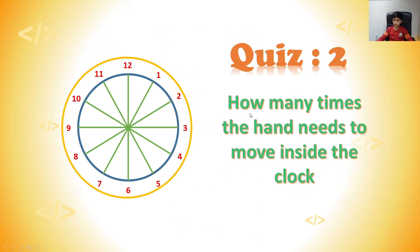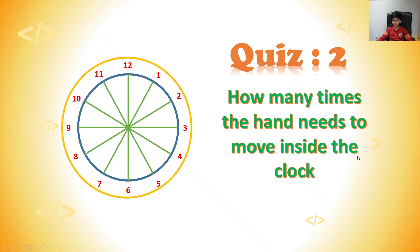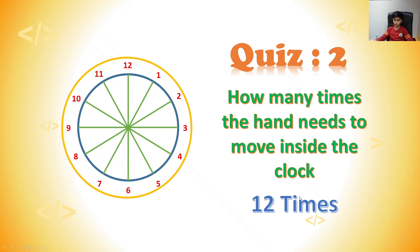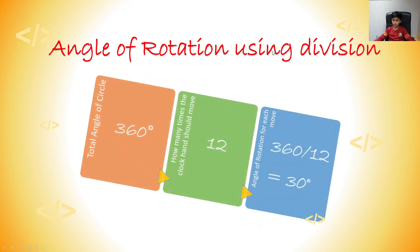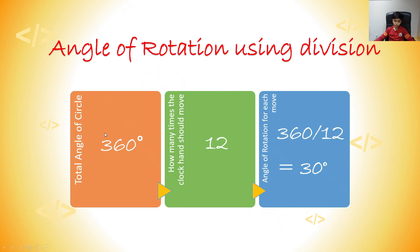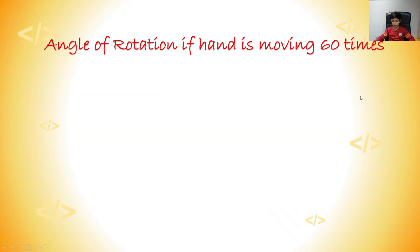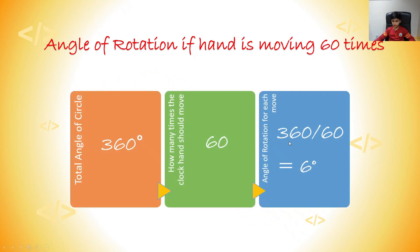Quiz number two: how many times does a hand need to move inside a clock? The answer is twelve times. But this is kind of tricky, because sometimes you want it to move 60 times or sometimes 12. Because we need to make it simple, we just made it 12. To calculate the angle of rotation using division, you take the angle of a circle and divide by the number of times you want your hand to move around the clock. In this case, 360 divided by 12 equals 30. If you want to use 60, you change 12 to 60 — so 360 divided by 60 equals 6. That's what the angle of rotation is.